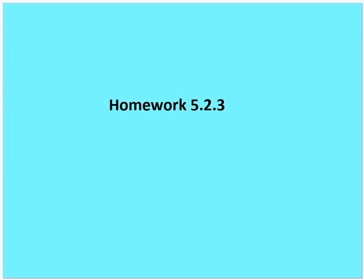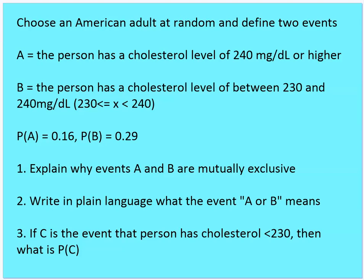This brings us to homework 5.2.3. We're going to end here and come back to talk about two-way tables. Event A is a person having a cholesterol level of 240 milligrams per deciliter or higher; event B is a cholesterol level between 230 and 240, not inclusive of 240. The probability of A is 0.16 and the probability of B is 0.29. Please answer the three questions and finish up with the video, and I'll see you when we start talking about two-way tables.